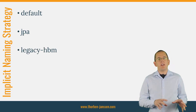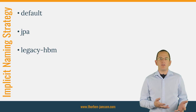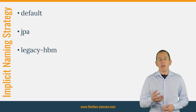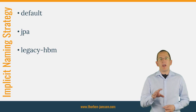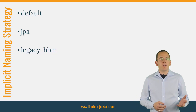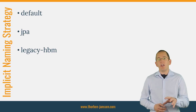This is Hibernate's original naming strategy. It doesn't recognize any of JPA's annotations, but you can use Hibernate's proprietary configuration file and annotations to define a column or entity name. In addition to that, there are a few other differences to the JPA specification. The logical name of a join column is only its attribute name. For join tables, this strategy concatenates the name of the physical table that owns the association, an underscore, and the name of the attribute that owns the association.